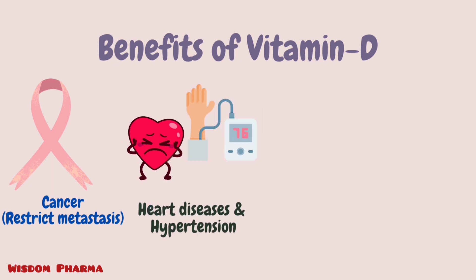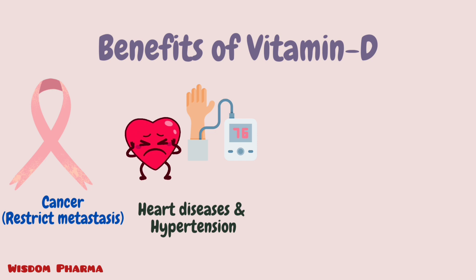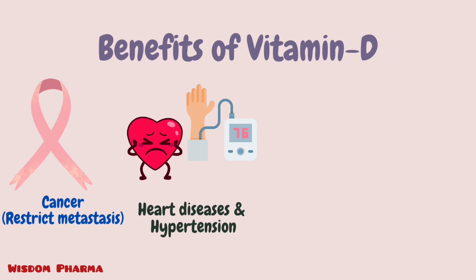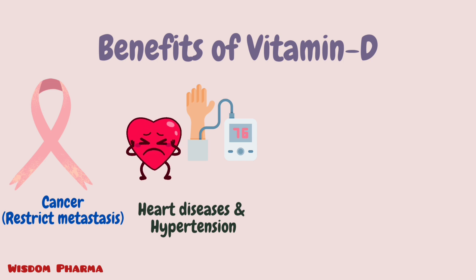Next is hypertension. Vitamin D levels are related to blood pressure. When vitamin D is sufficient in our body, blood vessels remain flexible and healthy, blood flow stays in the normal range, and blood pressure is automatically maintained in the normal range. So adequate vitamin D can help with hypertension.